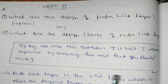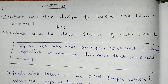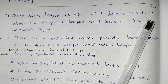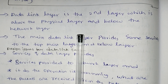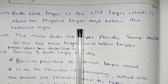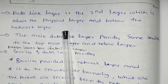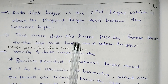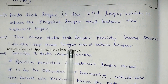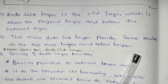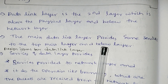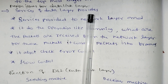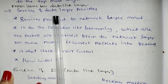We are going to discuss this topic. The data link layer is the second layer, which is above the physical layer and below the network layer. The main data link layer provides some services to the layers above and below it. Now, design issues for the data link layer: services that the data link layer provides.